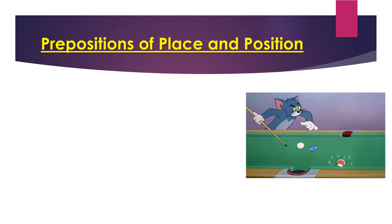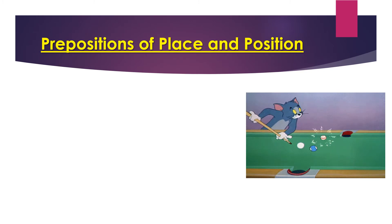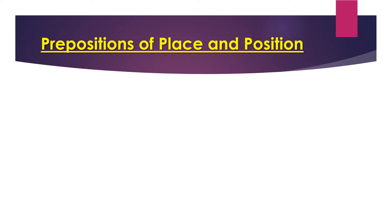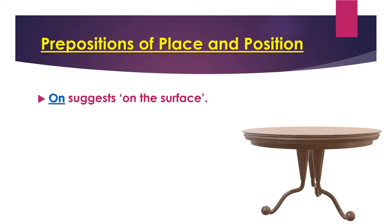We often get confused with these prepositions, so let us understand their correct use. The preposition 'on' suggests on the surface. There is a table here and the cup is on the table — right on the surface.